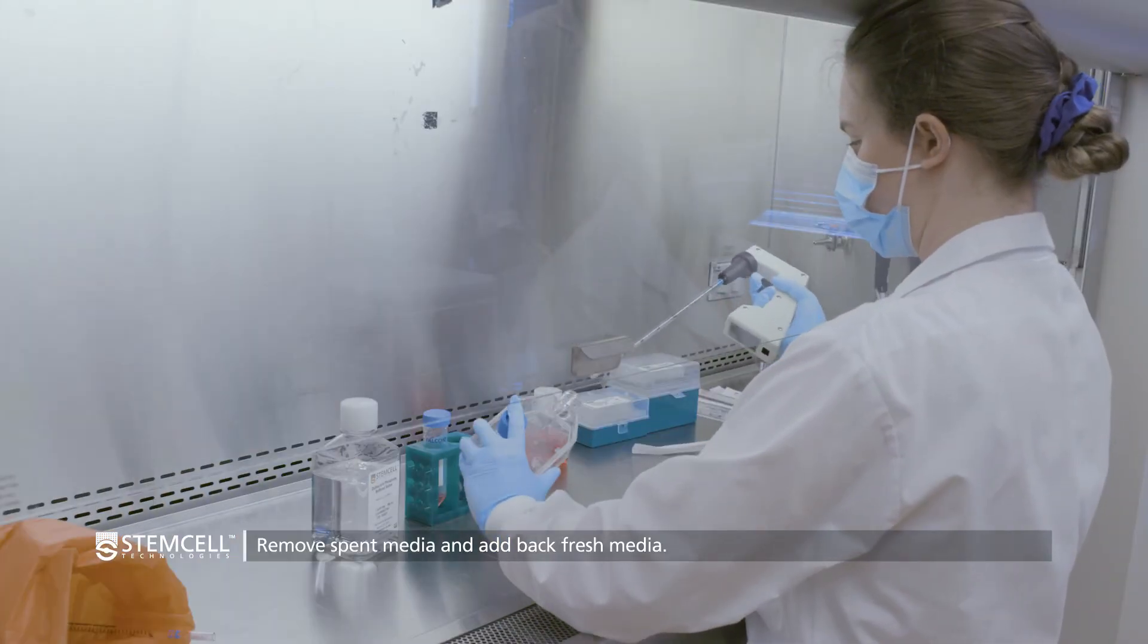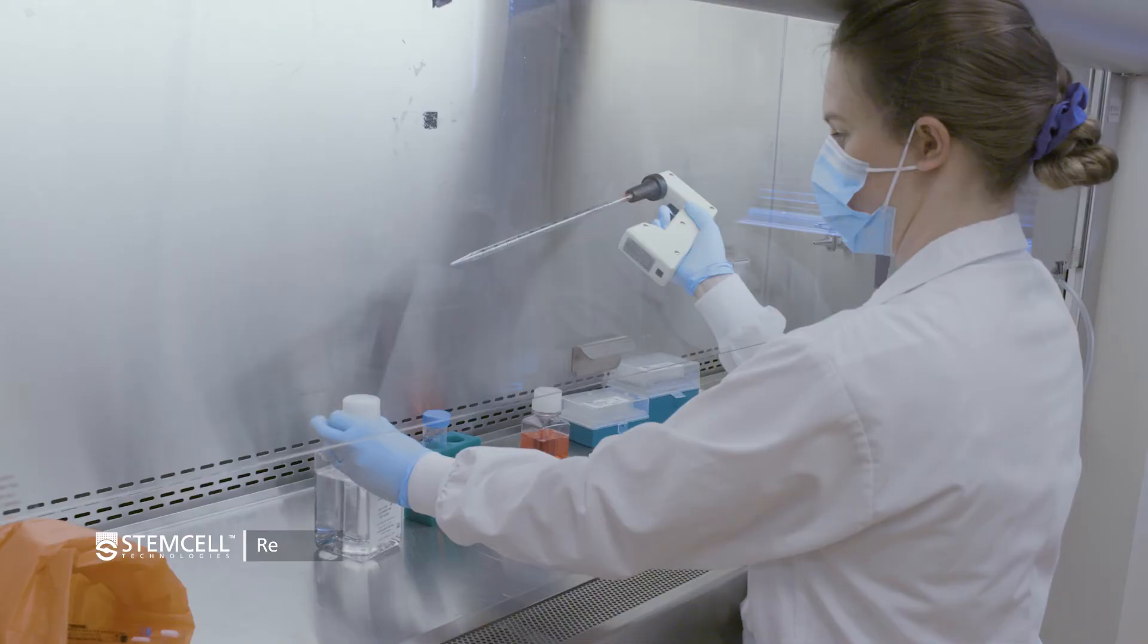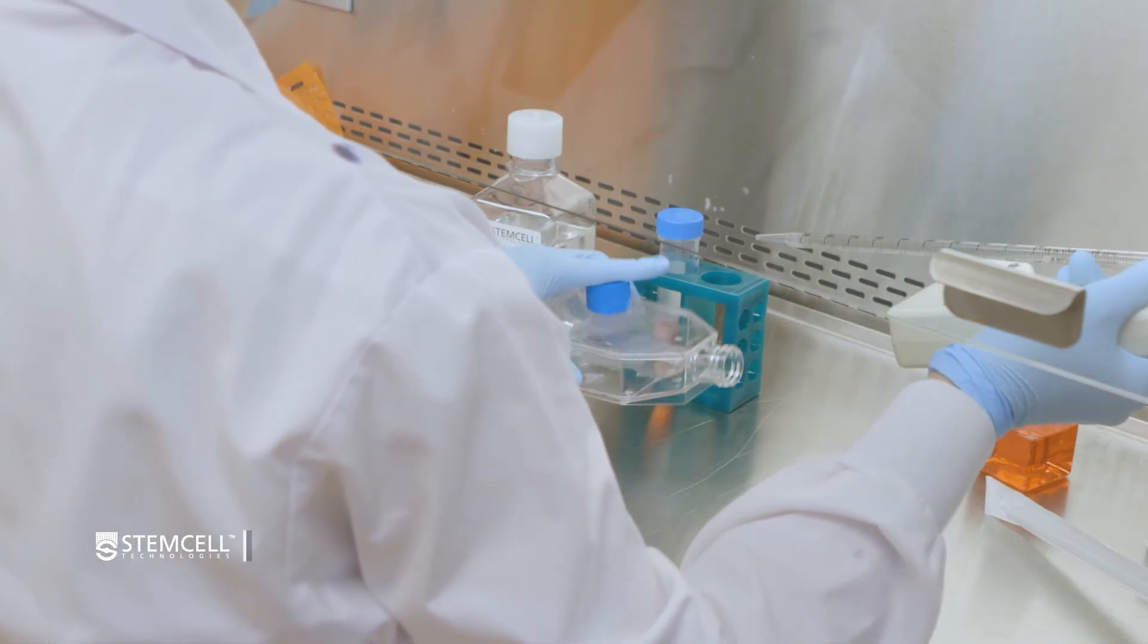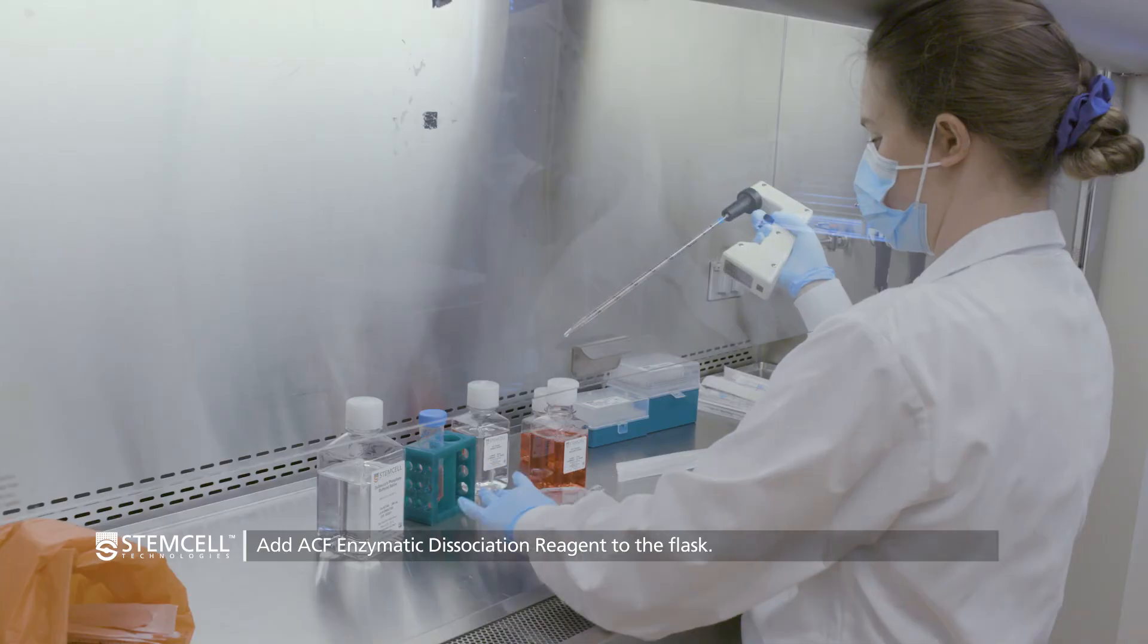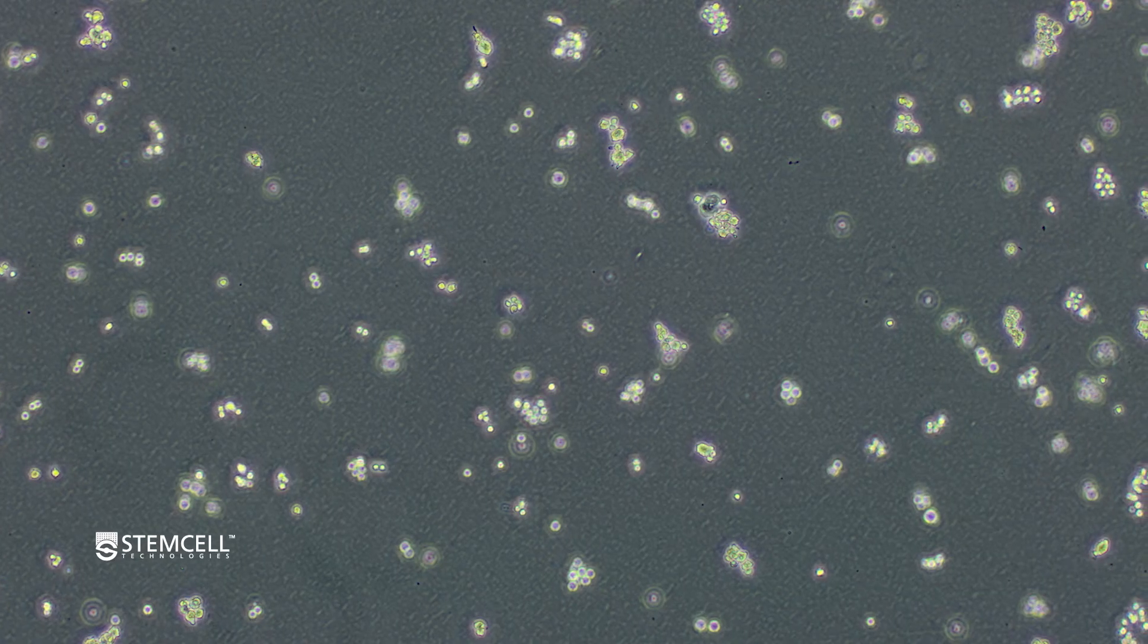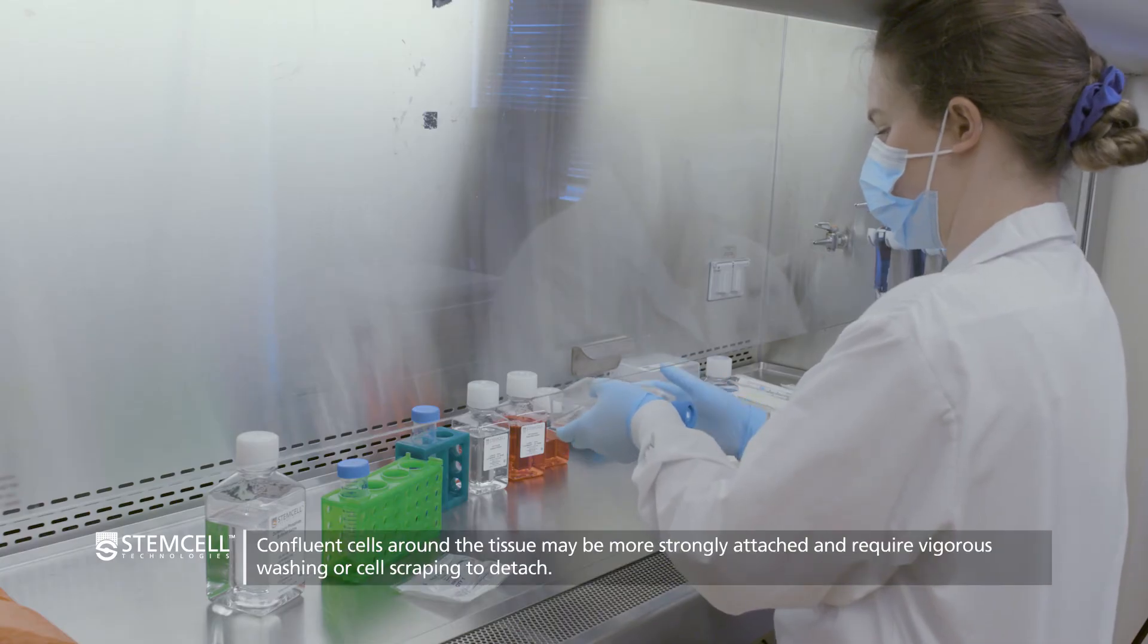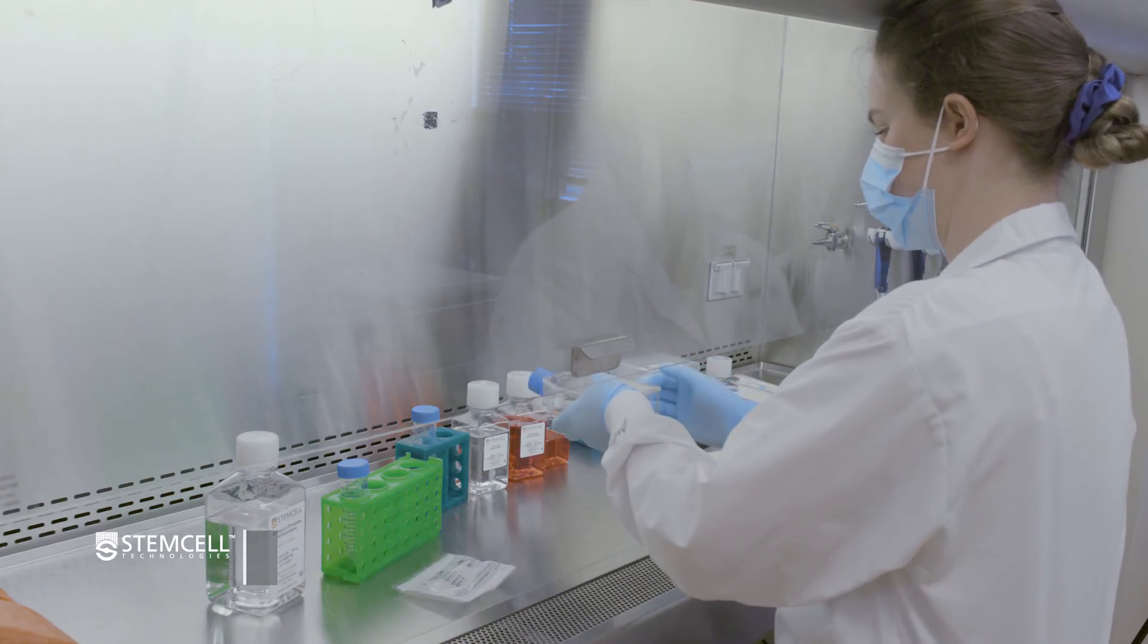To harvest the cells, remove all of the spent media and detached cells with an aspirator or serological pipette. Wash the flask once with PBS to remove any remaining loosely attached cells or tissue and the remaining medium. Add 5 ml of ACF enzymatic dissociation reagent to the flask. Incubate for 6 to 7 minutes at 37 degrees Celsius. Examine cells under a microscope to see if most of the cells have detached. Tap the flask vigorously to help with detachment. If cells are very confluent around the tissue, they may be more strongly attached and require vigorous washing or cell scraping to detach.